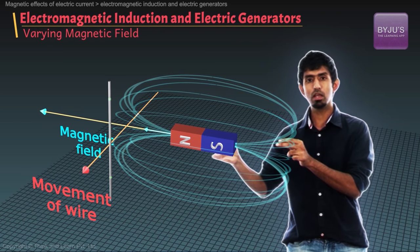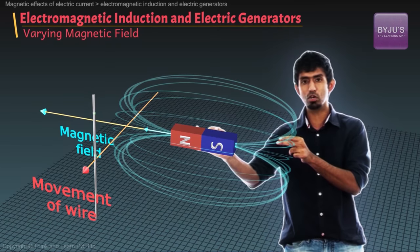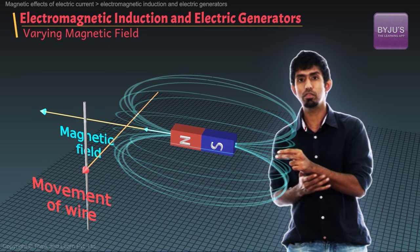We just saw that because there's going to be a varying magnetic field. Because the farther and farther you go, the lesser and lesser the magnetic field becomes.